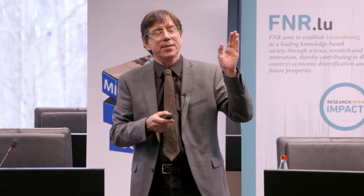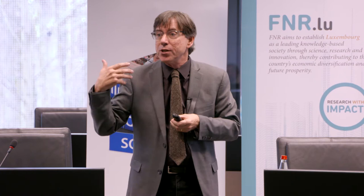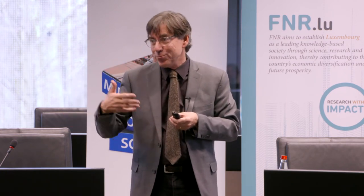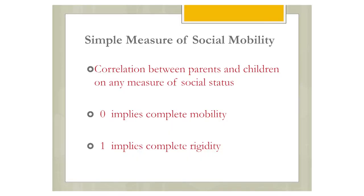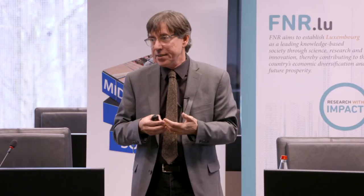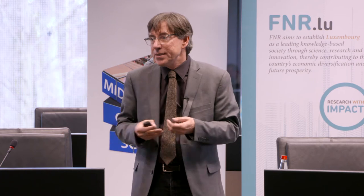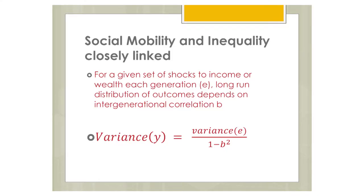We can measure social mobility in a very simple way. It's just a question of what's the correlation in any measure of social status between you and your children. If that correlation is zero, then the world is born anew in each generation. If the correlation is one, then everything gets replicated in the next generation. The rate of social mobility should also connect to the amount of inequality in any society, because if there's a constant set of shocks coming in terms of wealth or income or status, then the greater the persistence, the greater that intergenerational correlation, the greater will be the variance of outcomes.